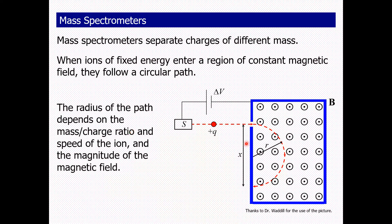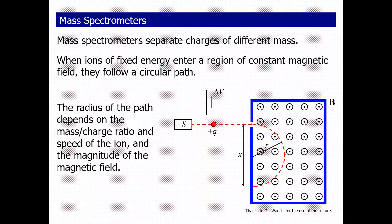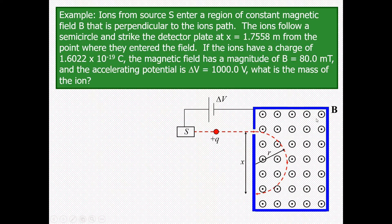The radius of the ion's trajectory depends on the mass-charge ratio, the speed of the ion, and the magnitude of the magnetic field. Different masses produce different radii, which is how the mass spectrometer separates ions of different masses.